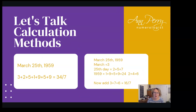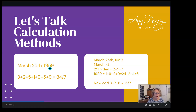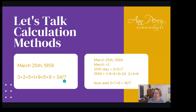I want to talk about some calculation methods. There are two examples I'm using here. One is March 25th, 1959 — my date of birth. When we add up all of the numbers in that date of birth, it adds up to 34, and 3 and 4 equal 7. The numbers that we add up to our final number — our main lesson — are what we call sub-lessons, and this whole number is referred to as a composite life path number.